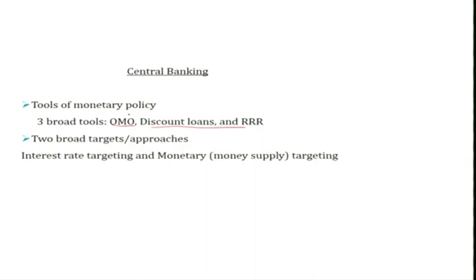For example, open market operations we have already discussed, and similarly discount loans and required cash reserve ratio — the required reserve ratio — these concepts have already been introduced. What we will do is put these tools in appropriate context and then see how, using each tool, the central bank is able to determine the level of money supply in an economy.